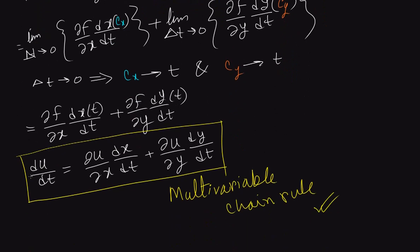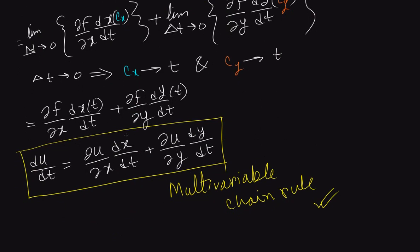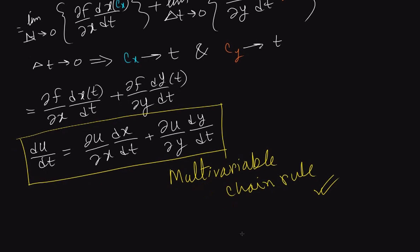The final expression becomes du/dt equals the partial of u with respect to x times dx/dt plus the partial of u with respect to y times dy/dt. This is the multivariable chain rule.